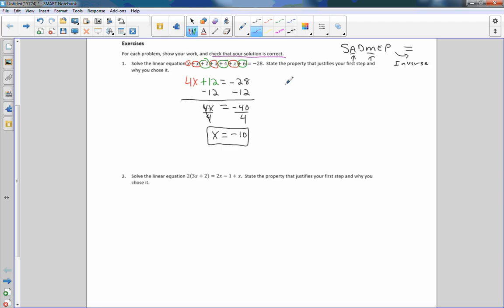Now it also says to check that your solution is correct. So what I need to do is put this equation back: x + x + 2 + x + 4 + x + 6 = -28. Plug in -10 for every x you see. -10 + -10 + 2 + -10 + 4 + -10 + 6 = -28. -10 + -10 is -20, plus 2 is -18, plus -10 is -28, plus 4 is -24, plus -10 is -34, plus 6 is -28, and that checks.